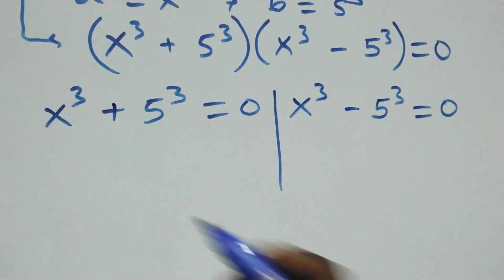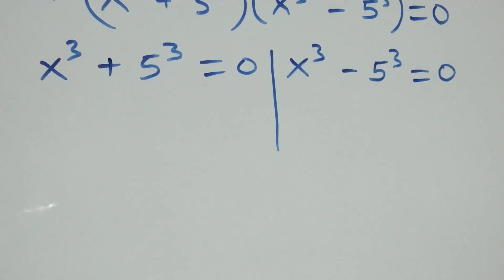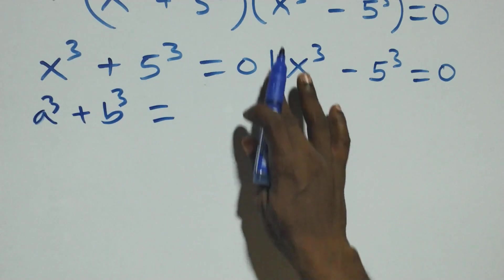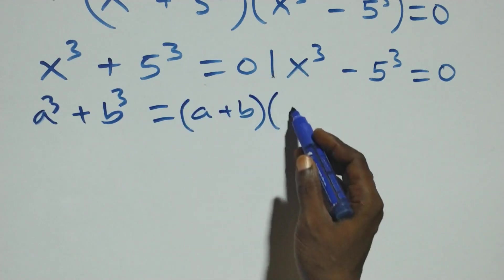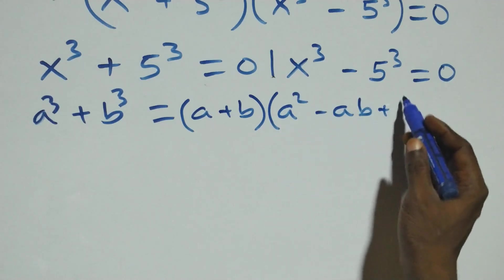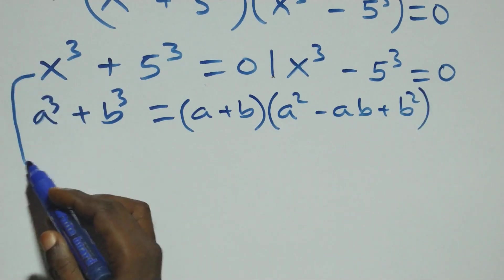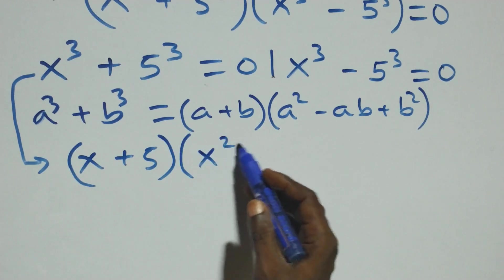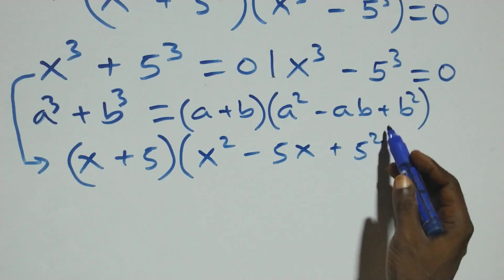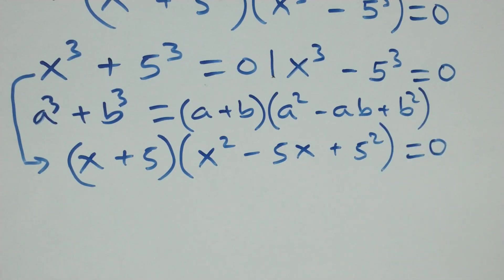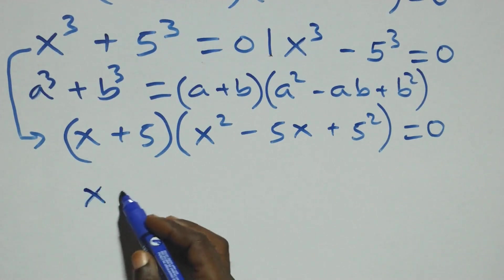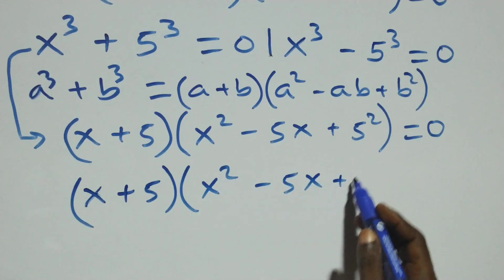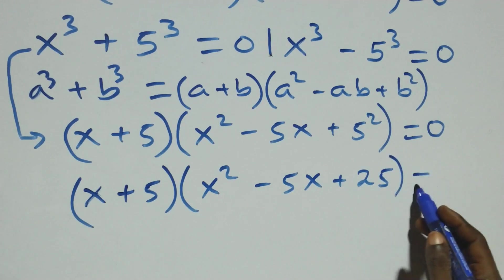Solving from the first case, this follows from the sum of cubes identity: a³ + b³ equals (a + b)(a² - ab + b²). Here, with a as x and b as 5, this becomes (x + 5)(x² - 5x + 5²), that is (x + 5)(x² - 5x + 25) equals zero.